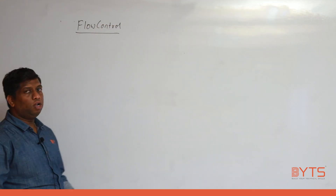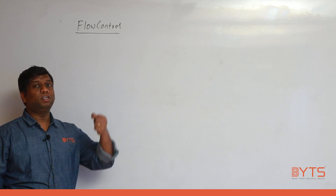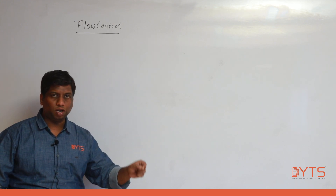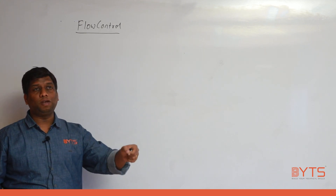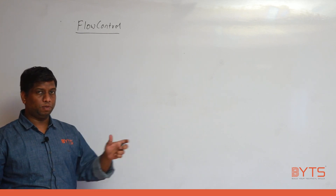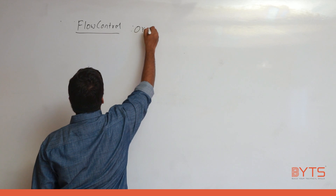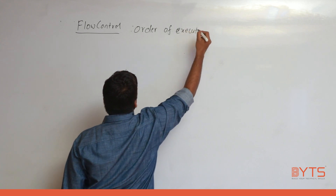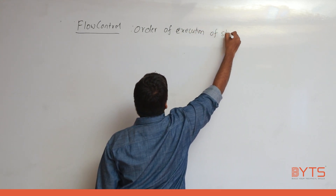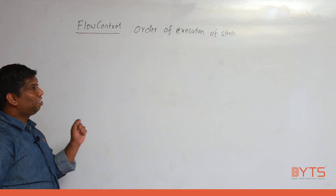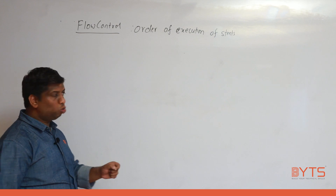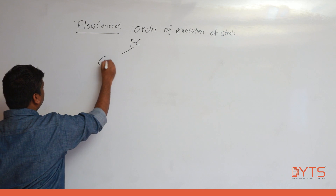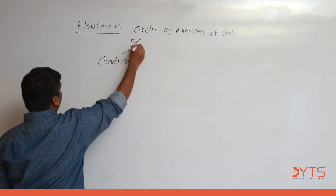What is the meaning of flow control? The order in which the statements are executed — the order of execution of statements. Let me write the definition: order of execution of statements. Flow control is divided into two types: one is conditional and another is unconditional.